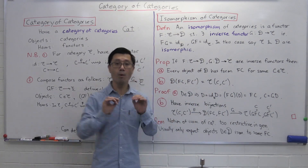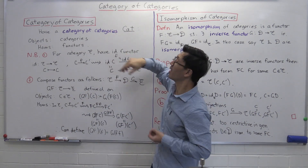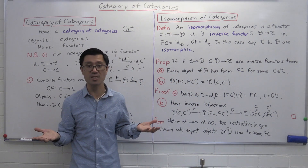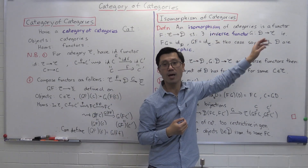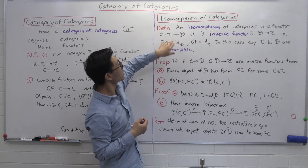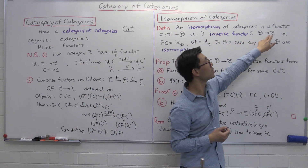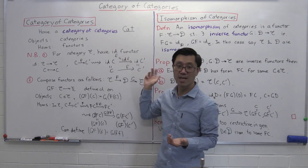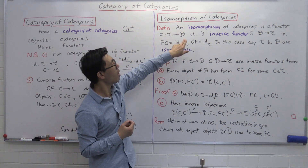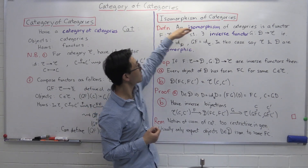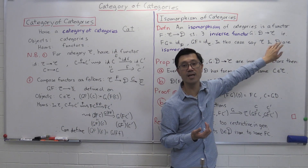Once you have the notion of a category, you can talk about isomorphisms in that category. In particular, we can talk about the notion of isomorphism in the category of categories. An isomorphism is something where you have an inverse morphism. An isomorphism of categories is a functor F from C to D such that there is an inverse functor G from D to C. The two composites equal the identity: FG is the identity functor from D to D, and GF is the identity functor on C. In this case we say the two categories C and D are isomorphic.